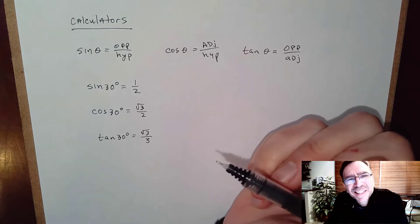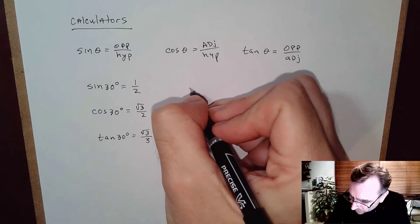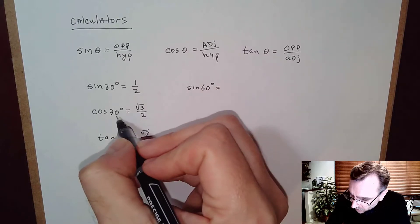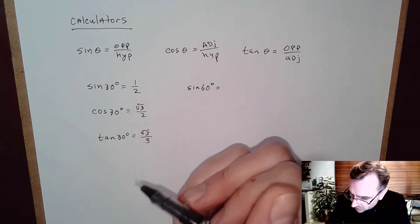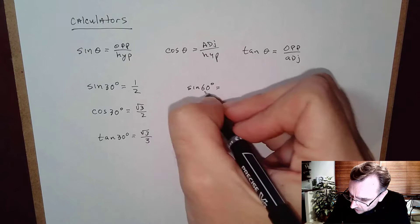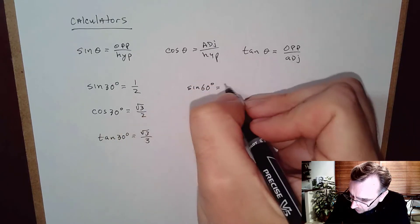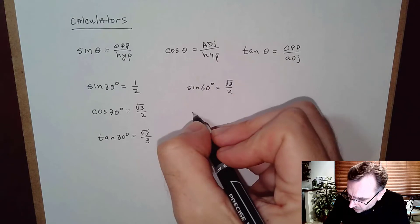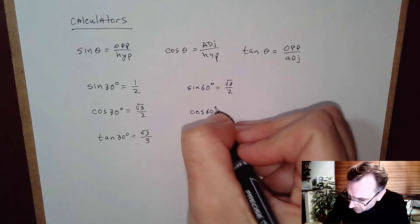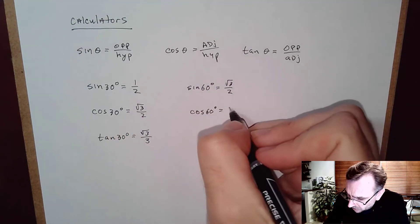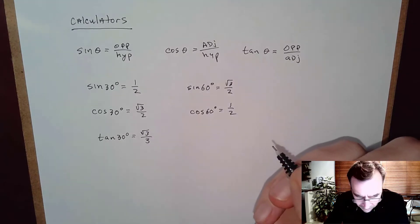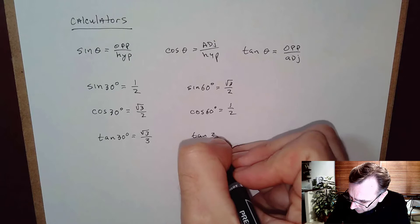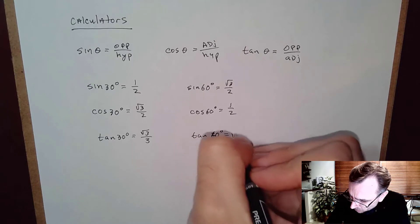The next special angle is 60°. Remember the co-function theorem: if the angles add up to 90°, the co-functions are equal. So sine of 60° equals cosine of 30°, which is √3/2. Cosine of 60° is the same as sine of 30°, which is 1/2, and tangent of 60° is √3.